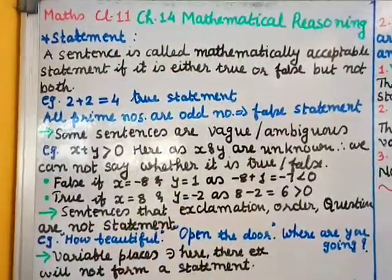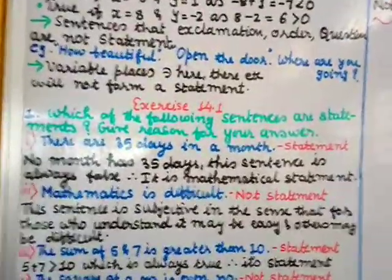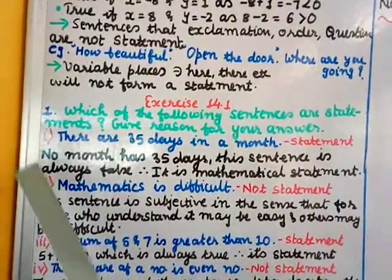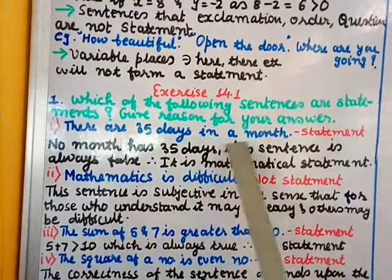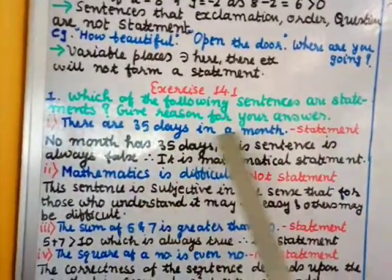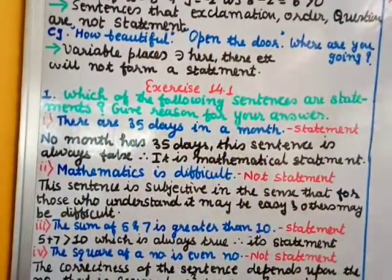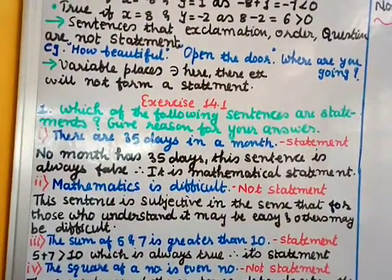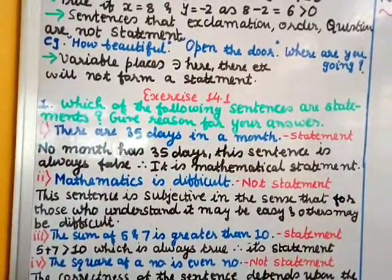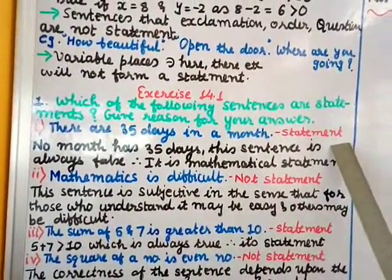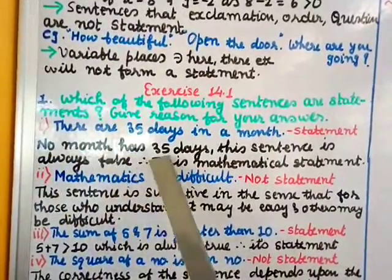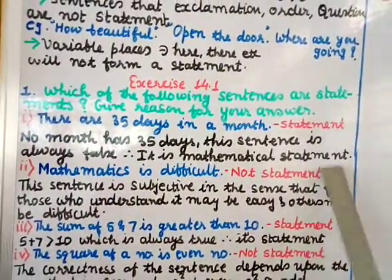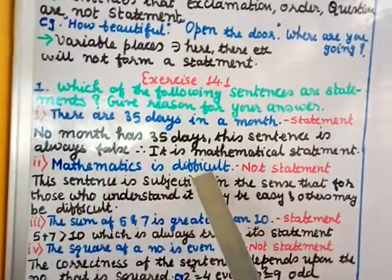Now we can start Exercise 14.1, Question 1: Which of the following sentences are statements? Give reasons. Roman numeral one: 'There are 35 days in a month' — this is a statement, because we can clearly say this sentence is false. We know no month has 35 days. There is no dilemma of whether it will be true or false — we know clearly it is false. Therefore it is a mathematical statement: this sentence is always false.